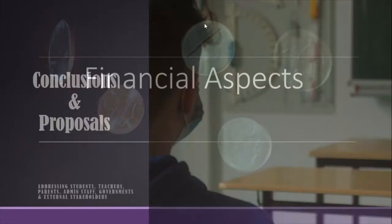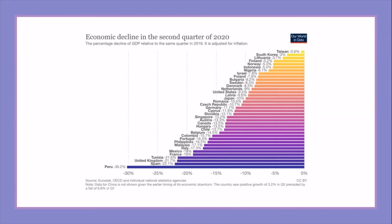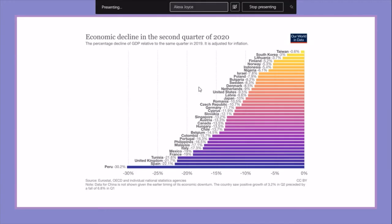So we start with conclusions and proposals. The first pillar is the financial aspects. I picked this graph so you can see what is already happening — it's from Eurostat and OECD. Economic decline in the second quarter of 2020. The economic impact of the crisis has already become evident. As usual, the most vulnerable countries and communities will be affected the most.